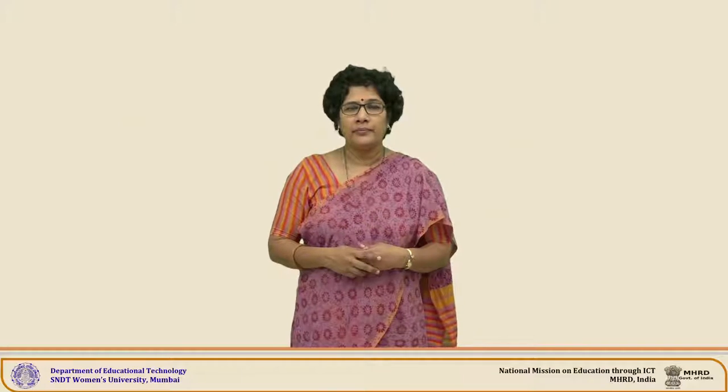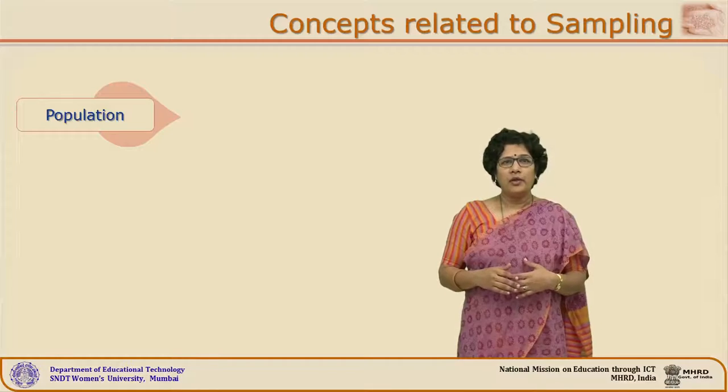You would come across terminologies like population, sampling frame, and sampling bias. So initially we will spend some time on understanding these terminologies in detail. Here we go one by one. The first terminology is population.